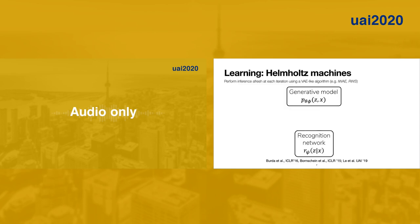One approach to learning the generative model and recognition model pair — a Helmholtz machine — would be to use a variational autoencoder-like algorithm such as importance-weighted autoencoder or re-weighted wake sleep. The main idea is to use samples from the recognition network to train both the generative model and the recognition network itself, called the wake phase. The main shortcoming of this family of algorithms is that they rely on the recognition network being high quality at the start of training, which is often infeasible.